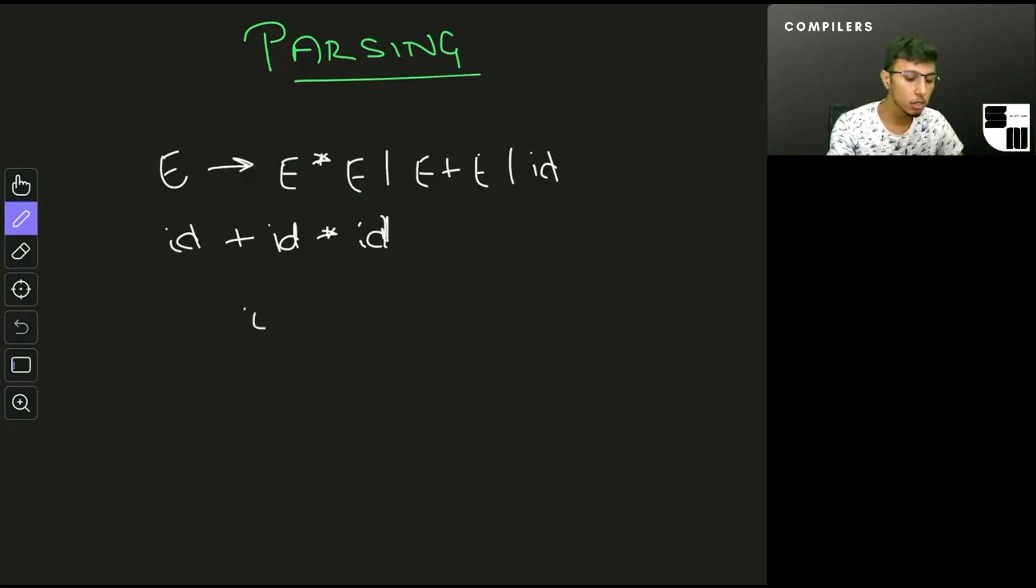The first one would go something like this: the first one would be E goes to E plus E, and I would change the leftmost E with an E times E and id here.